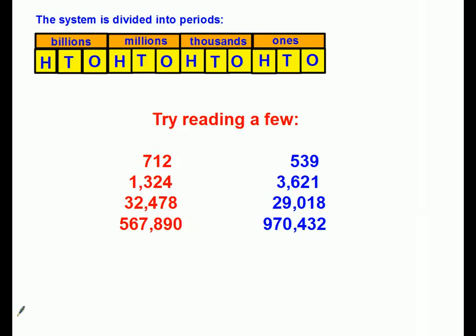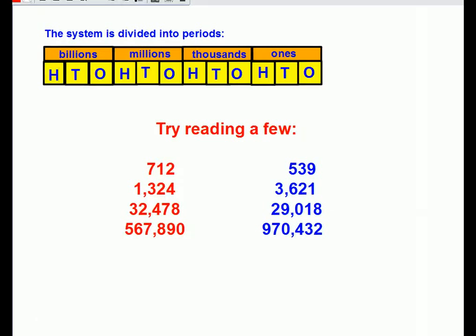Let's bump it up a digit — this time we're looking at a five-digit number. Remember, look at the periods. We're using ones and we're using thousands. Keep it in the commas and you'll be fine. The next red number is 32,000 — that's right, it's 32,478. Now you try the blue one. It's 29,018.